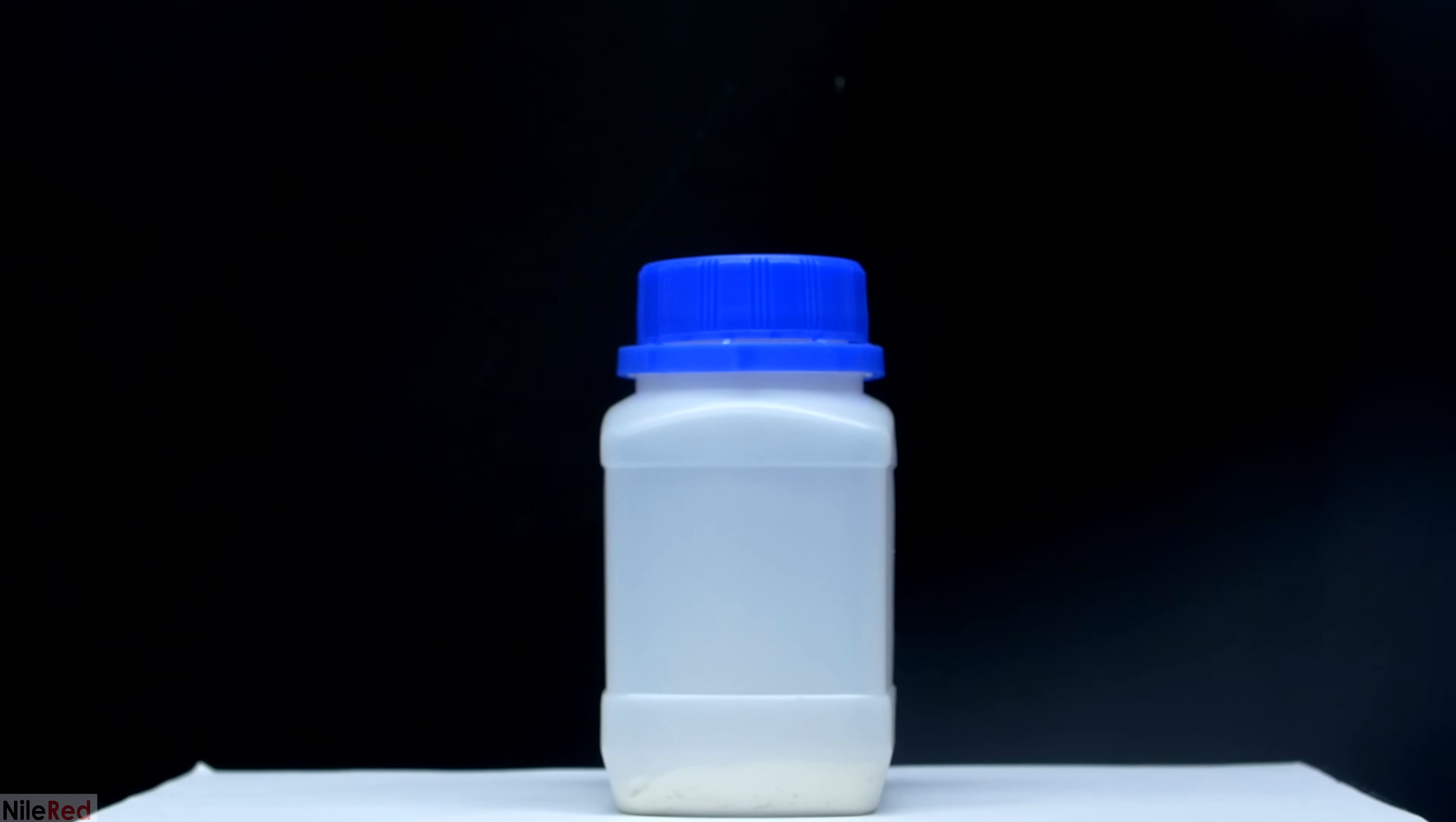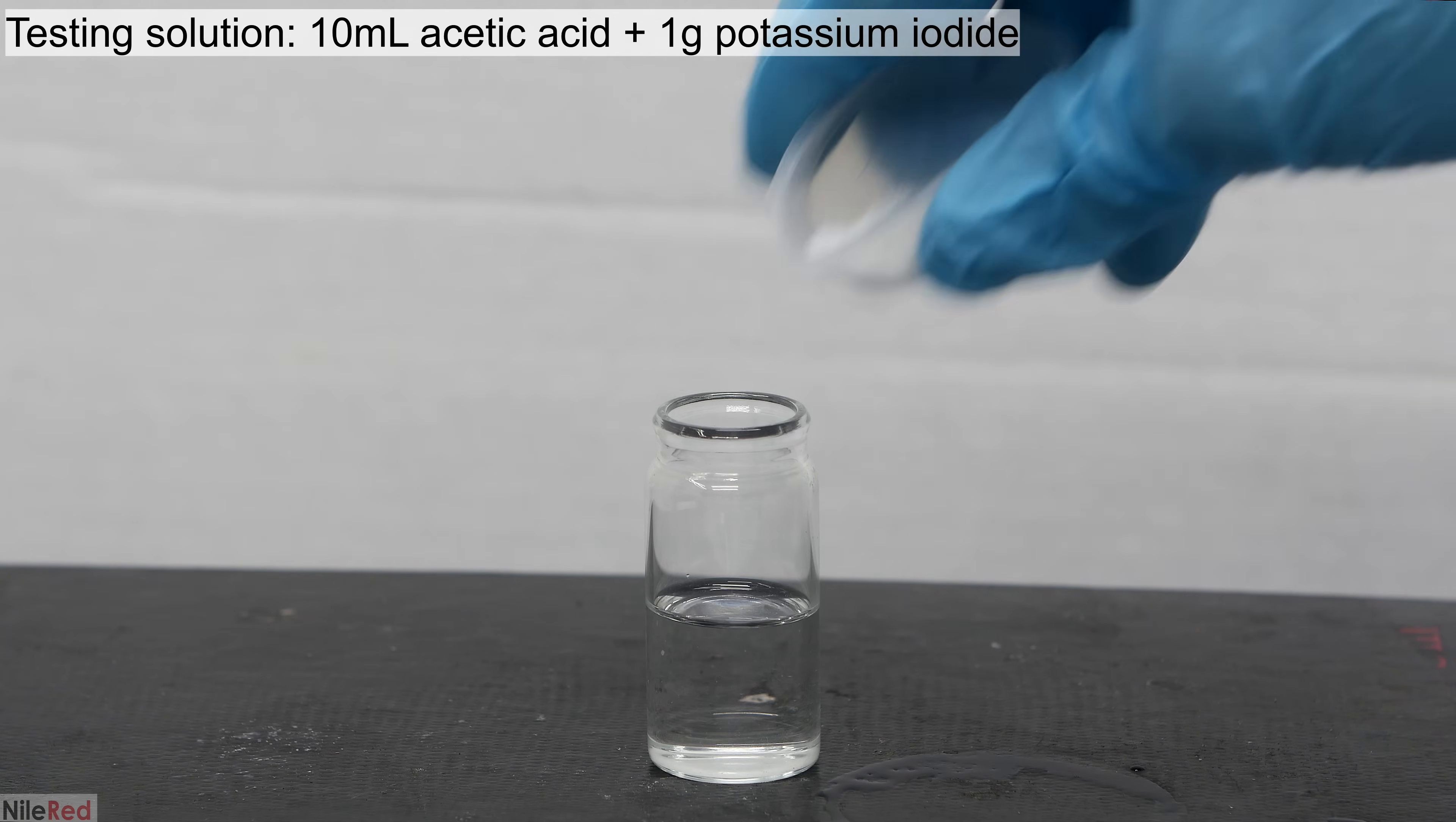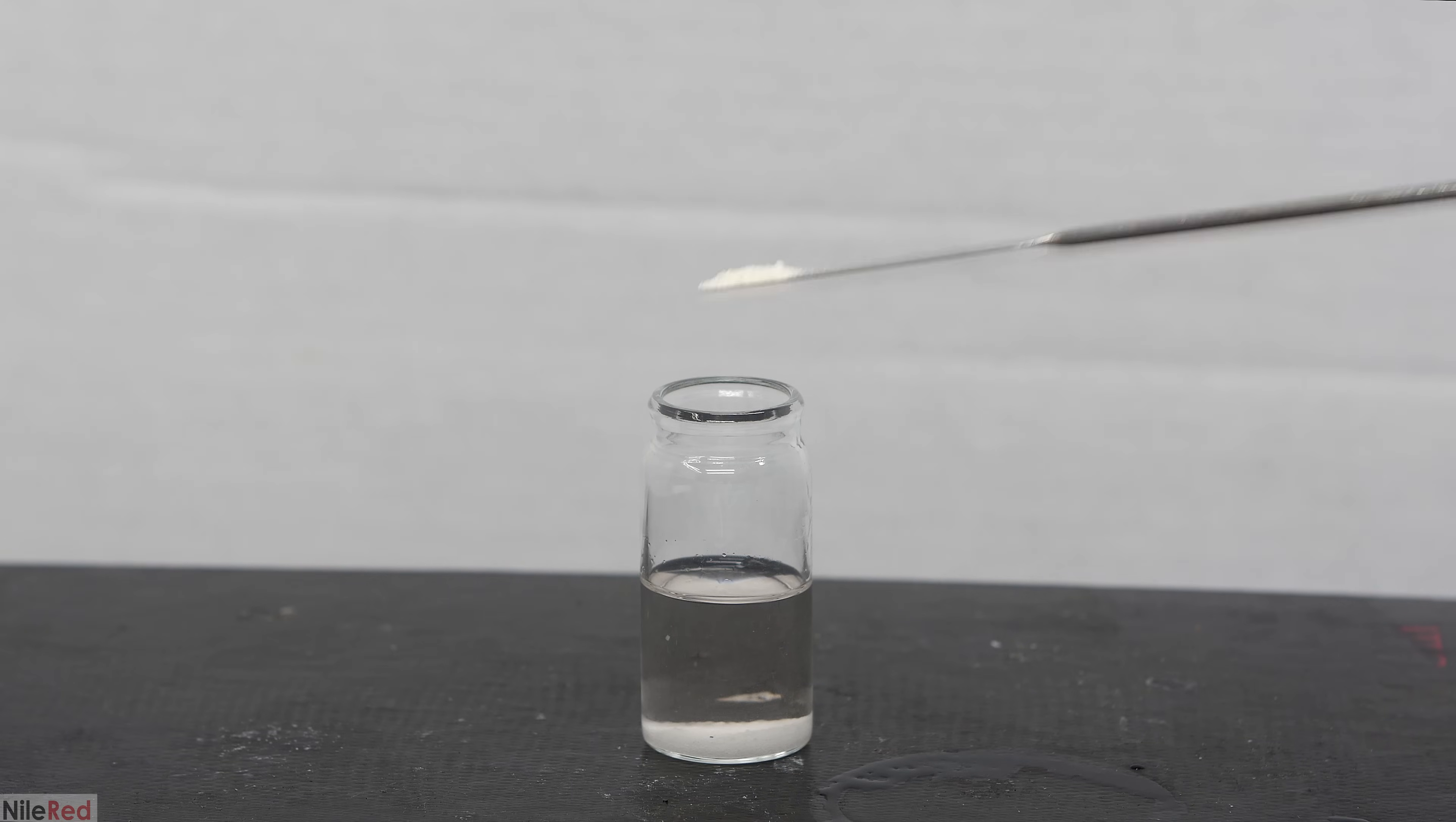Before proceeding on to doing any experiments, the first thing that I'm going to do is make sure that we actually have lithium peroxide. In order to do this, I'm going to carry out a very simple peroxide test. To carry out the test, we need to first prepare the test solution, which involves mixing about one gram of potassium iodide and about 10 milliliters of glacial acetic acid. I use a glass stir rod to mix things up, but most of the potassium iodide is going to remain undissolved. We're done making our test solution now, and all we need to do is add a little bit of our alleged lithium peroxide.